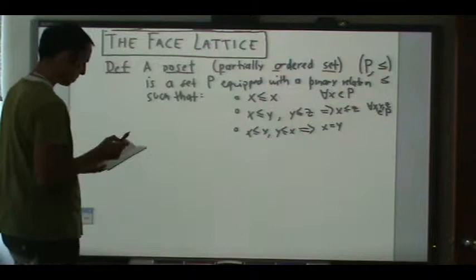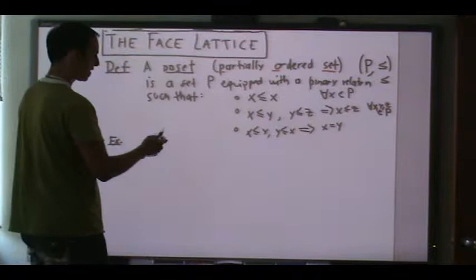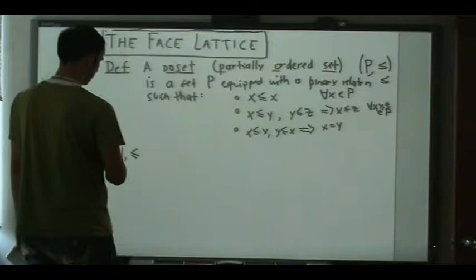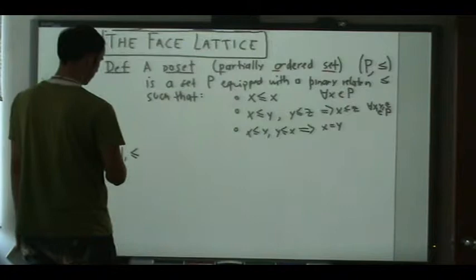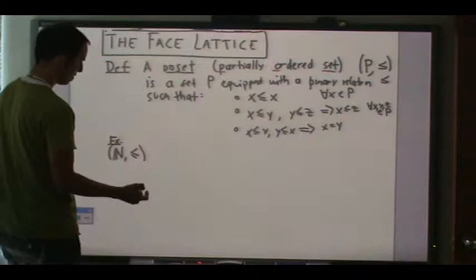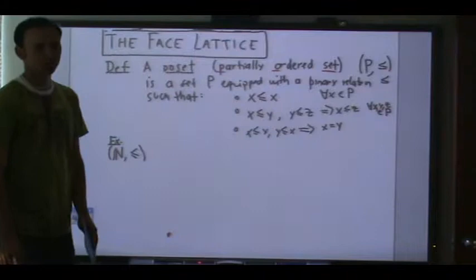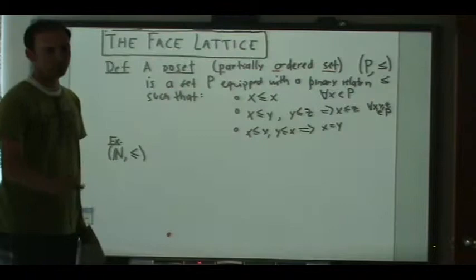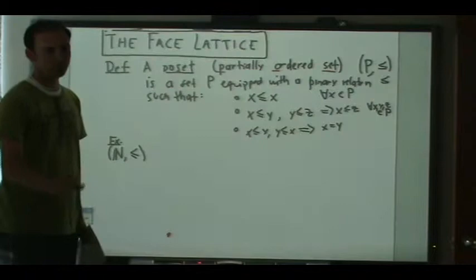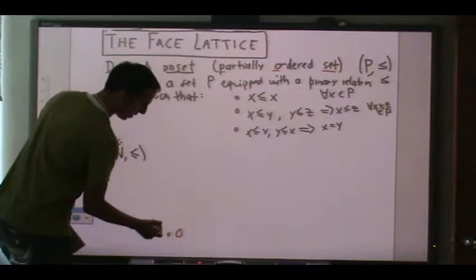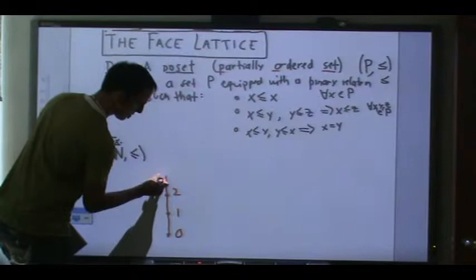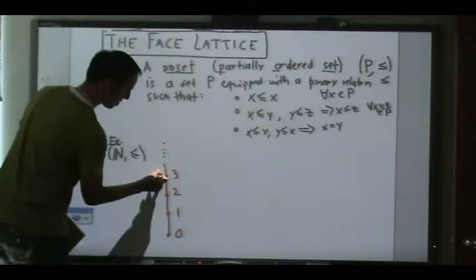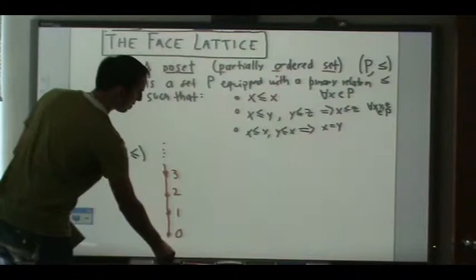Some examples: the first is the natural numbers with the usual ≤ order. We like to draw pictures for these. In Colombia, zero is a natural number — well, it depends on whom you ask, but let's say zero is natural and the smallest. Then one, two, three, and so on.